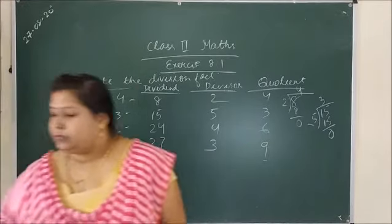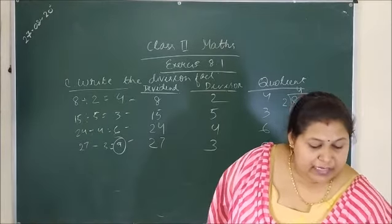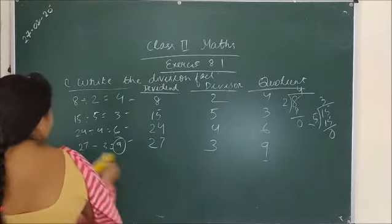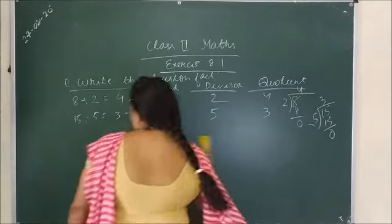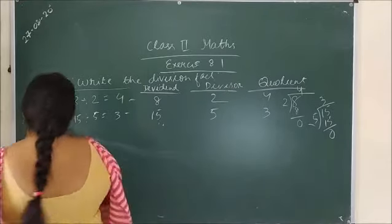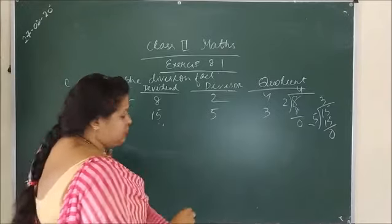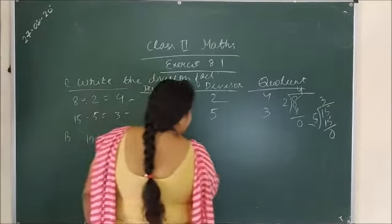So in your section number B, there are the number lines. So what is the role of the number lines here? I am just doing one for you. There is 10 divided by 2, so there is the line.